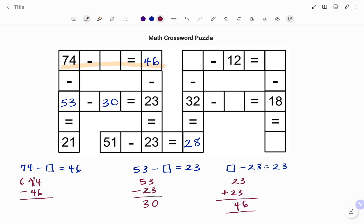14. Then I have 14 minus 6, that's 8. 6 minus 4, that's 2. So therefore, the content of my bracket or my missing box will be 28. So I have 74 minus 28 equals 46.